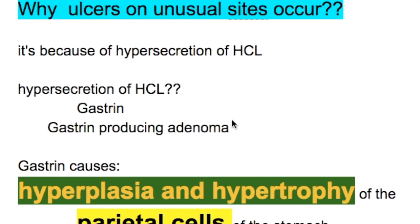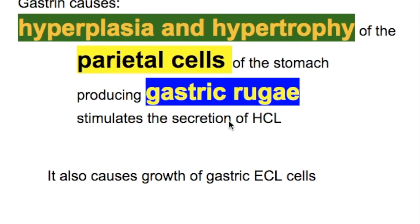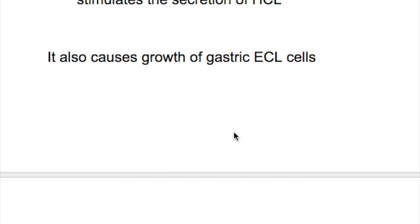Why does hypersecretion of HCl occur? Due to excess gastrin production from a gastrin-producing adenoma. Gastrin causes hyperplasia and hypertrophy of the parietal cells of the stomach, producing gastric rugae, and stimulates secretion of HCl. It also causes growth of gastric and enterochromaffin-like cells.